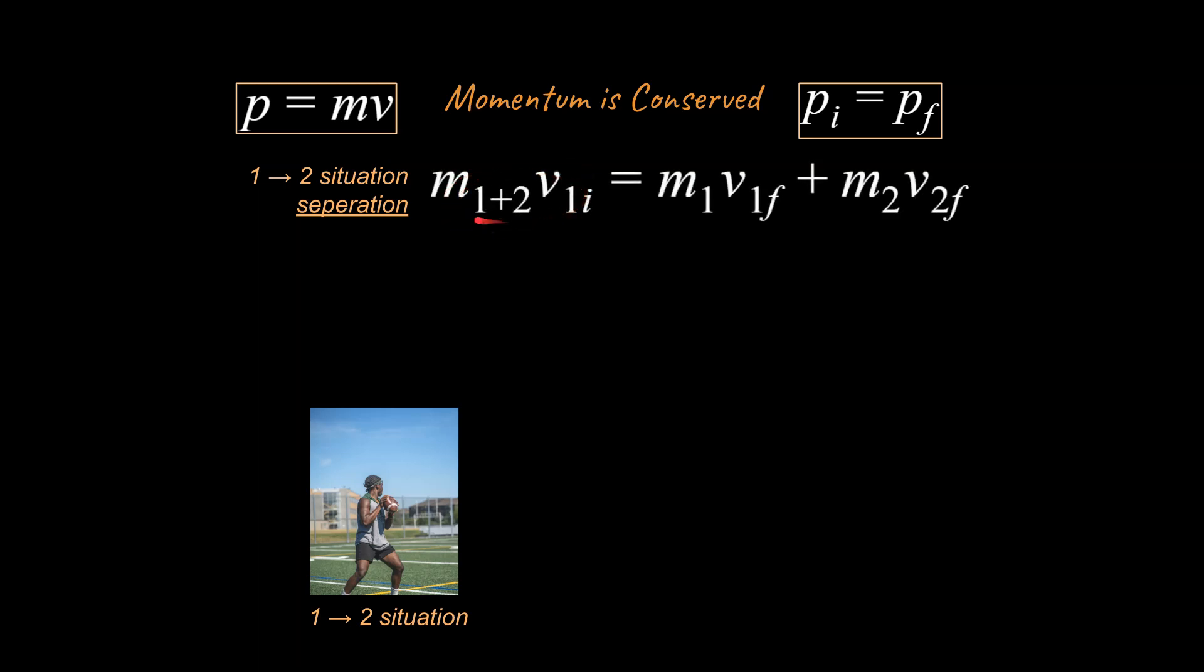Here is what this is going to look like. You have the momentum of both objects because they're together before the event. We combine the mass of the quarterback and the football times their initial velocity together, equals the mass of the football times the velocity of the football final plus the mass of the quarterback times the velocity of the quarterback final. That's what we mean when we say momentum is conserved—a one-to-two scenario or a separation situation.